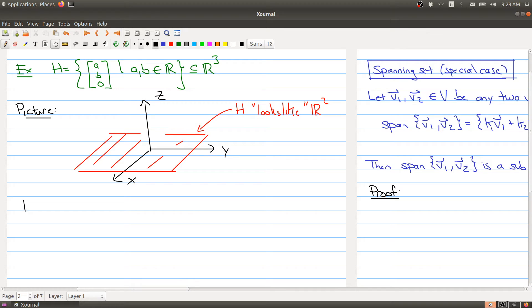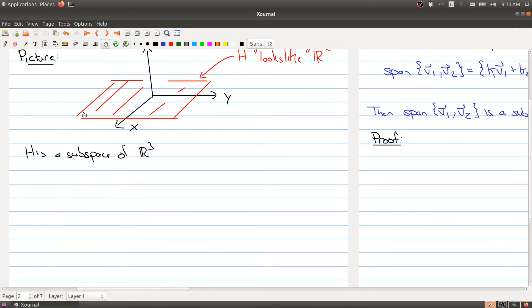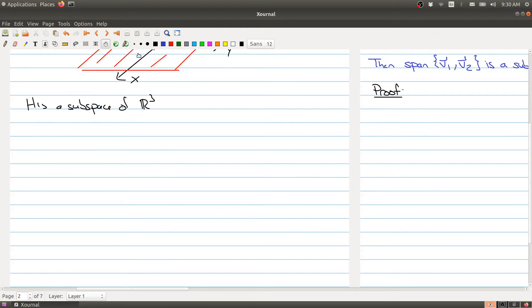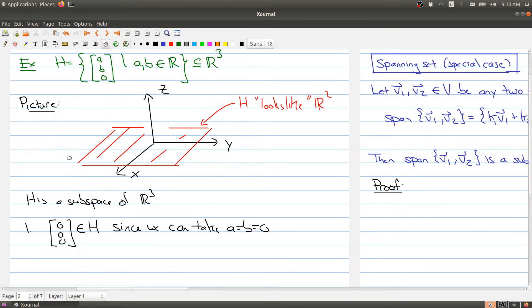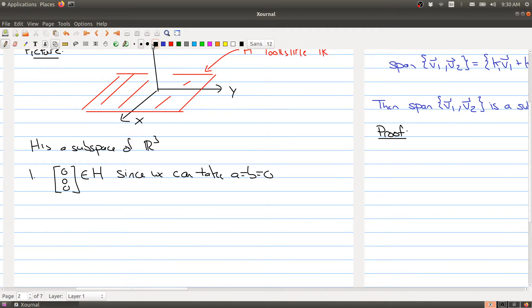Okay, so the claim is that H is a subspace of R3. And this is good practice of checking the three conditions. So the first condition is just saying that the zero vector belongs to H. And this is okay, since we can take A equals B equals zero. H is a collection of all vectors where A and B can be anything. So I can take, of course, A and B to be zero. So the zero vector of R3 is inside of H.